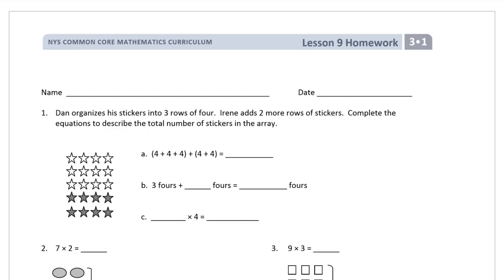Welcome to the homework for third grade module one lesson nine. Write your name first. We've been working on the commutative property of multiplication — the order of factors doesn't matter, you always get the same product. And we're sneaking our way into the distributive property of multiplication, where you can add different products together by combining factors.